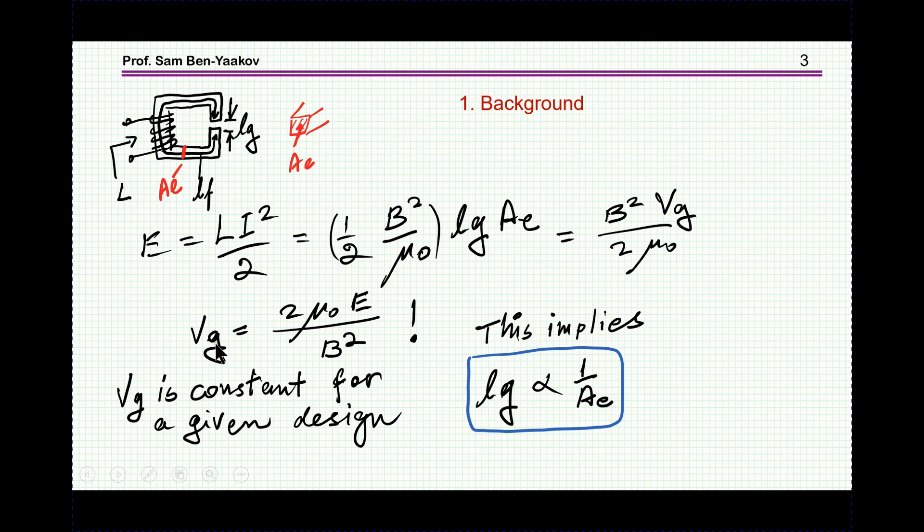Now, if the volume of the gap for a given design is constant, it turns out that the length of the gap will be proportional to 1 over the cross-section area because the product of these is constant. This was developed in the video I mentioned.